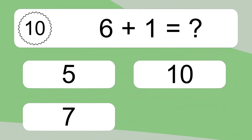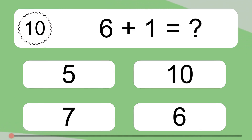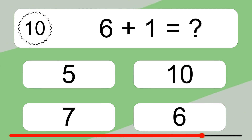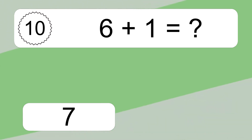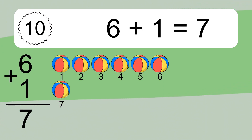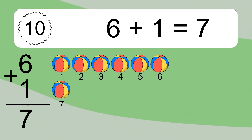6 plus 1 equals what? 6 plus 1 equals 7. Let's count it. 1, 2, 3, 4, 5, 6, 7.